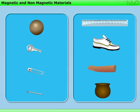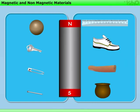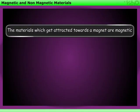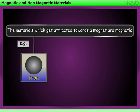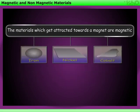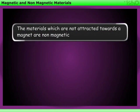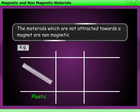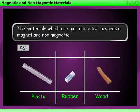From these two activities, it can be seen that a magnet only attracts certain materials. The materials which get attracted towards a magnet are said to be magnetic — for example, iron, nickel, or cobalt. Whereas the materials which are not attracted towards a magnet are said to be non-magnetic — for example, plastic, rubber, wood, etc.